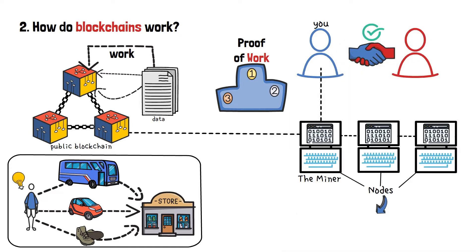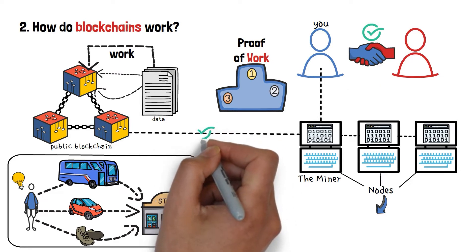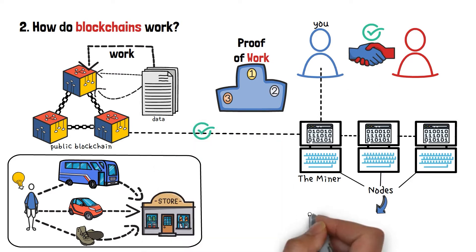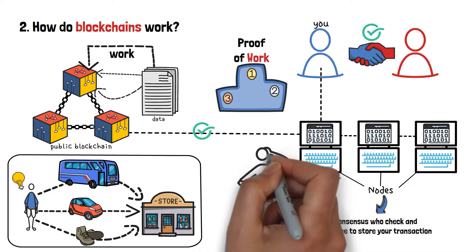And, let's say, to save your records in a blockchain. Those nodes are decision-makers, a consensus who check and agree to store your transaction. Now, let's not get too technical. Instead, allow me to go back to simple examples.